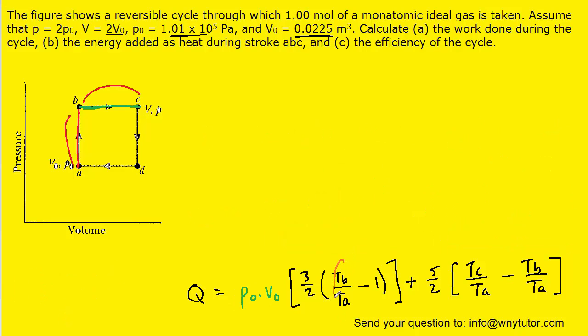Next, we're going to try to convince ourselves that this term, Tb over Ta, is actually equal to 2. And so that's going to apply for this Tb over Ta and also this Tb over Ta. But of course we want to try to prove that to ourselves.